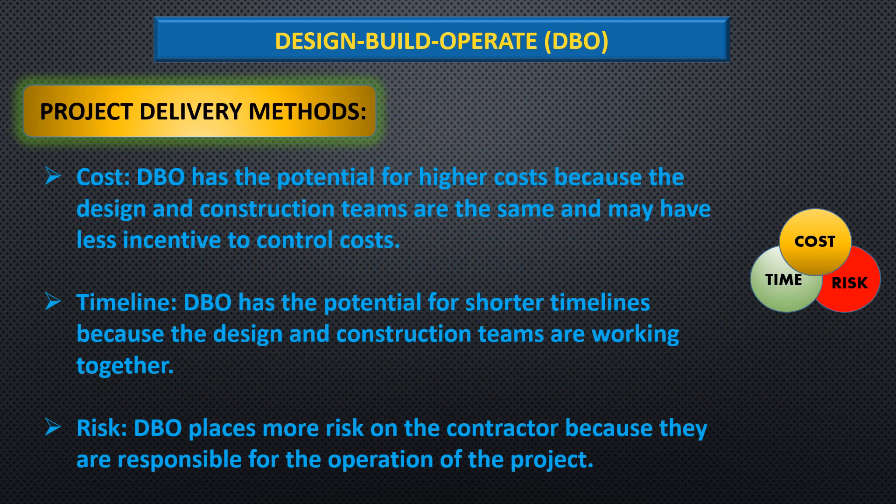Cost: DBO has the potential for higher costs because the design and construction teams are the same and may have less incentive to control costs. Timeline: DBO has the potential for shorter timelines because the design and construction teams are working together. Risk: DBO places more risk on the contractor because they are responsible for the operation of the project.